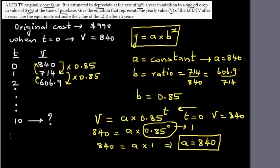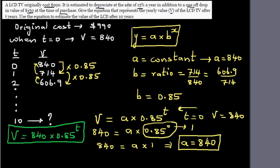A is the initial value. And this is the rate at which it is decreasing. So we can say the value of this LCD TV can be given by this formula of 840, which is the initial value times the rate, which is 0.85 raised to t. And I hope you understand 0.85 is related to the rate of 15%.